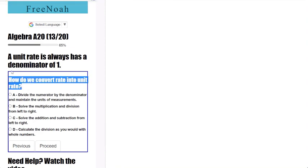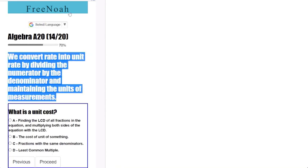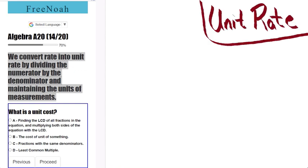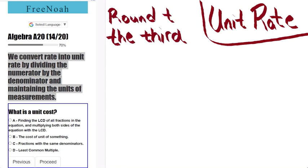Okay, let's convert rate into unit rates here. How do we convert rate into unit rate? Well, the unit rate always has a denominator of 1. We convert rate into unit rate by dividing the numerator by the denominator and maintaining the units of measurements. We have unit rate and we're going to round to the third decimal place.